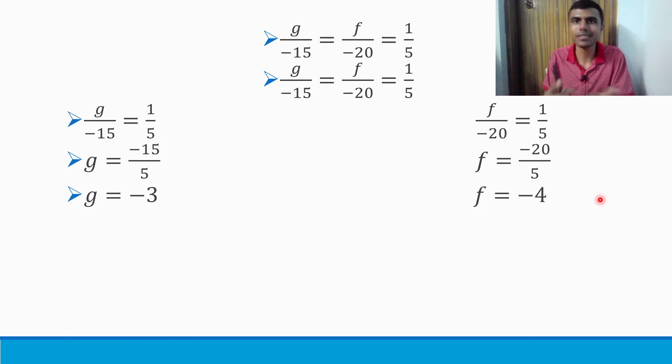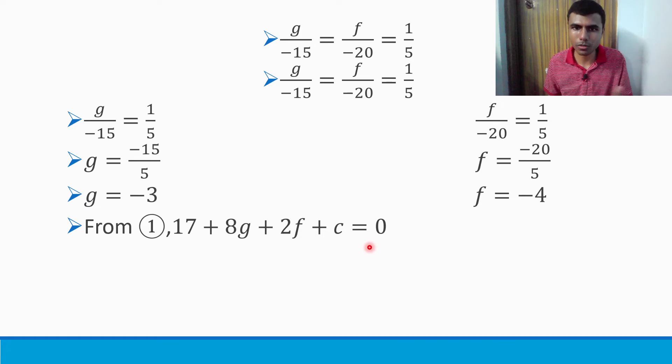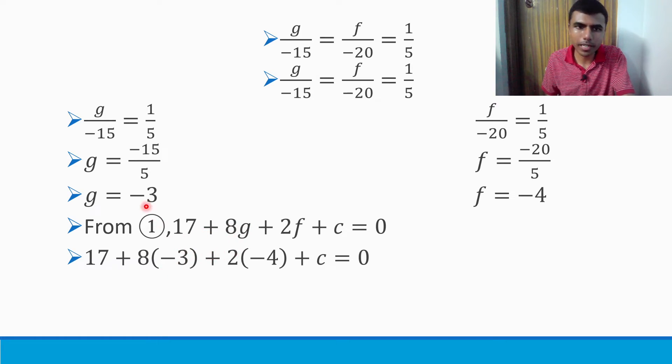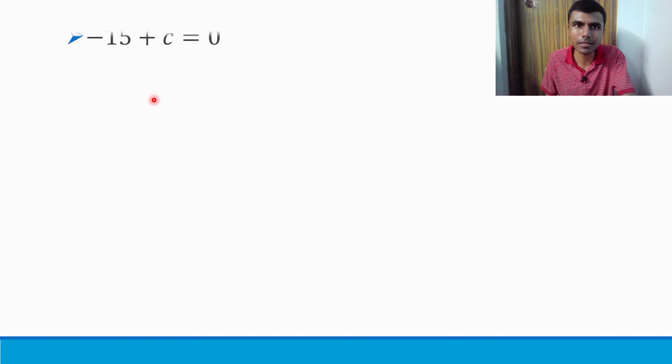What's remaining? c. Just substitute it in equation 1: 17 + 8g + 2f + c = 0. We know g = -3 and f = -4. So 17 + 8(-3) + 2(-4) + c = 0. This gives 17 - 24 - 8 + c = 0, which is -15 + c = 0. Therefore c = 15.